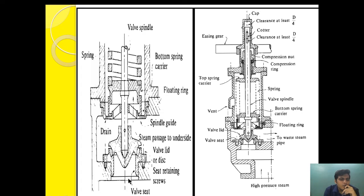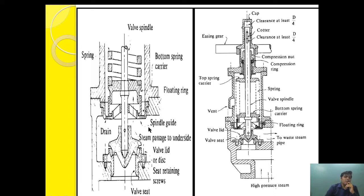When the valve is lifted, the steam pressure is acting directly on the lower spring carrier whenever steam is escaping. The steam escaping from the valve area is also acting on the lower spring carrier, so the spring is in direct contact with the escaping steam. As the pressure of the boiler increases, the temperature of the steam also increases.